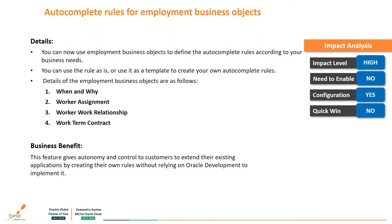The next autocomplete rules feature covers employment business objects. In our business flows covering sections like work assignment or work term contracts, we can use these autocomplete rules. Oracle has studied various businesses and different business requirements and provided these autocomplete rules for specific business domains. This feature gives leverage out of the box so we don't need to rely on Oracle development to implement it every time.